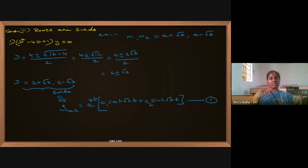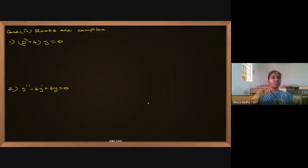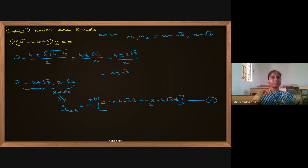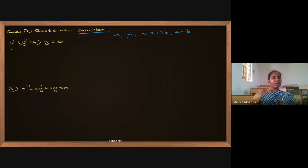Substitute the initial conditions to find c1 and c2, then put them in for the final homogeneous solution. Now if the roots are complex: m1, m2 are of the form a ± jb. Unlike surd roots where √b is a real decimal value, here we have an imaginary component. For the question (D² + 4)y = 0, the second term coefficient is 0.